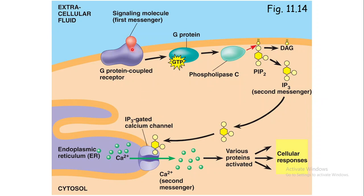When a ligand binds to a G-protein-coupled receptor, the G-protein gets activated, which activates the phospholipase C enzyme. This enzyme breaks PIP2 into two molecules: DAG and IP3. IP3 is the ligand responsible for opening the calcium ion channels present on the endoplasmic reticulum. As shown in the image, when IP3 binds to the calcium ion channel on the endoplasmic reticulum, the channel opens.